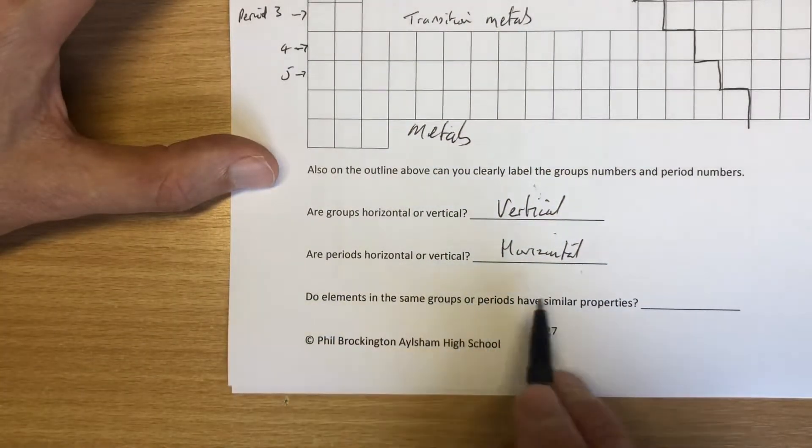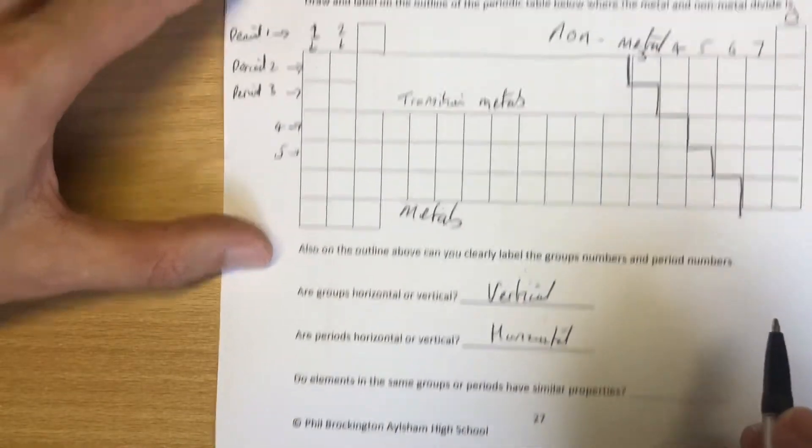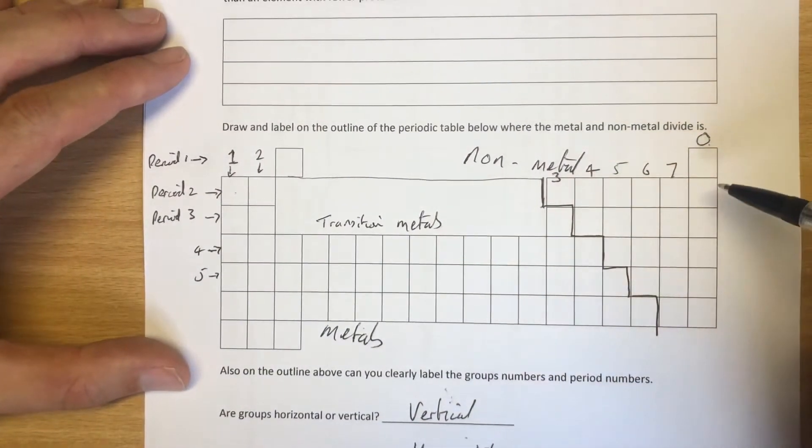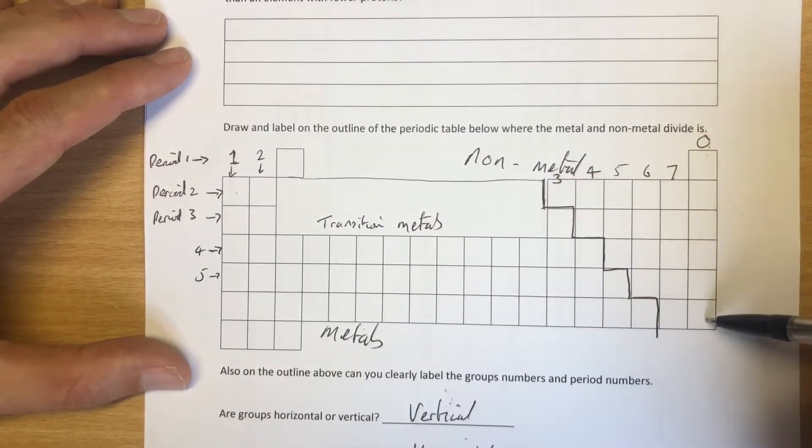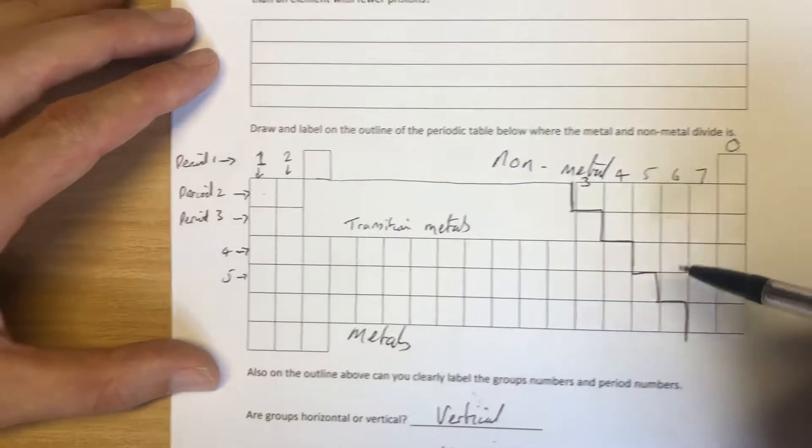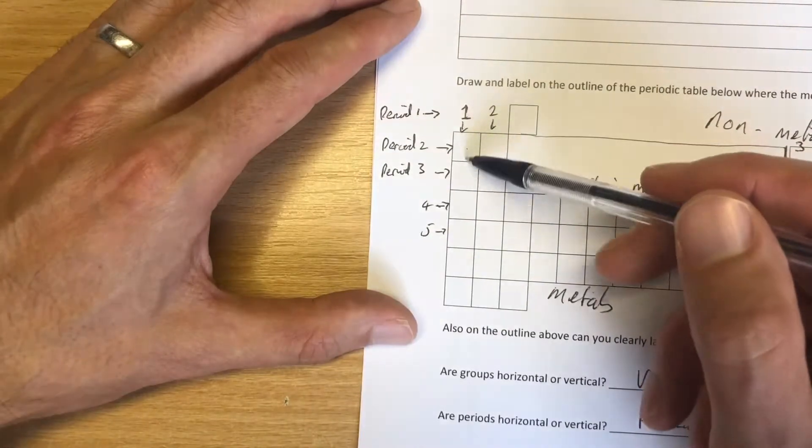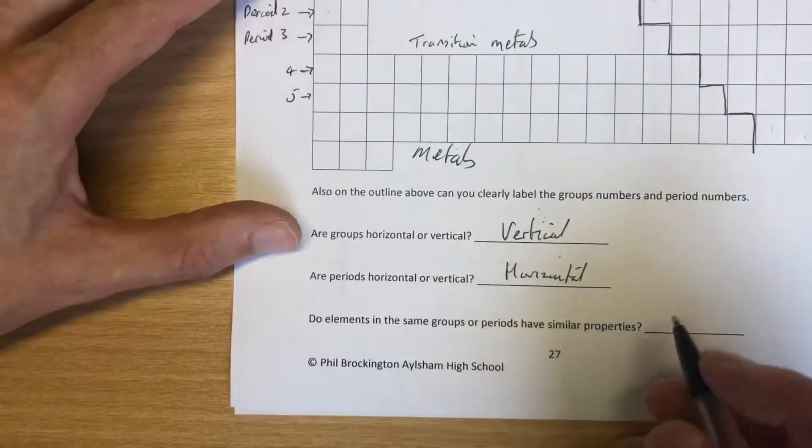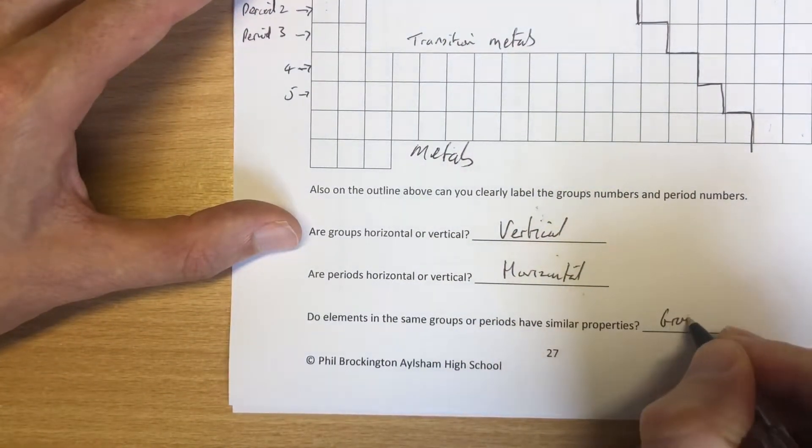Do elements in the same groups or the same periods have similar properties? The answer is groups. Everything in group zero reacts with absolutely nothing. This group here, the halogen group, group seven, these are reactive non-metals. Group one here, these are reactive metals. So elements in the same groups have similar properties.